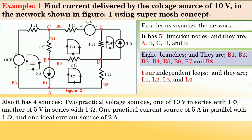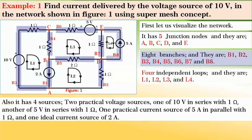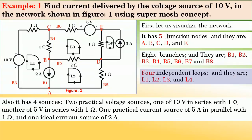It has 8 branches: B1, B2, B3, B4, B5, B6, B7 and B8. It also has 4 independent loops and they are L1, L2, L3 and L4 as shown in the figure.